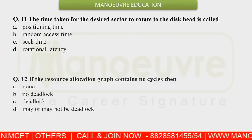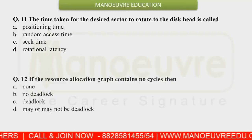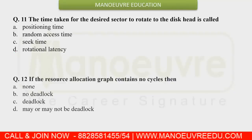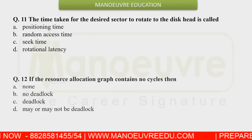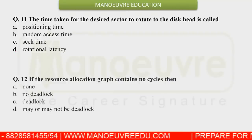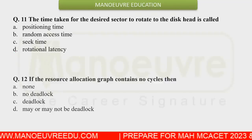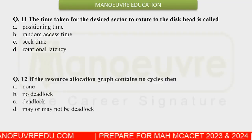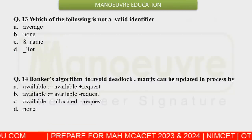Regarding resource allocation, the question was about the resource allocation graph. When there are no cycles inside the resource allocation graph, that indicates there is no deadlock.